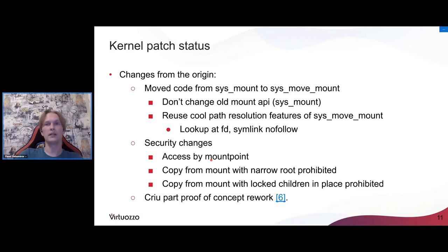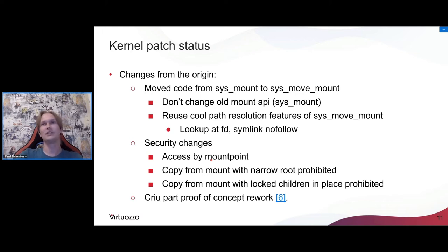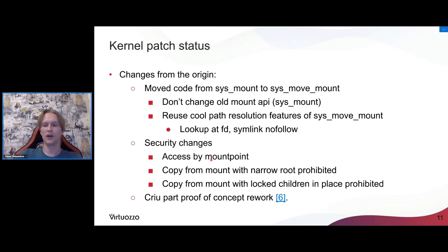I prepared a CRIU port of our Virtuosa version of the mount v2 algorithm, and it actually works, but with small restrictions — it doesn't pass all tests. For the user namespace flavor it doesn't go well, but in Virtuosa we passed those tests. We need to port something more, but it was a draft proof-of-concept port. We will do a full port in future.